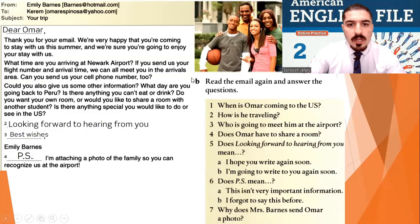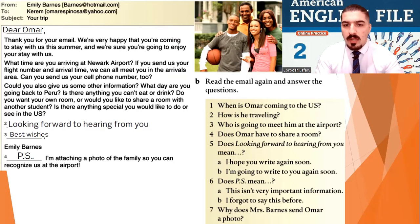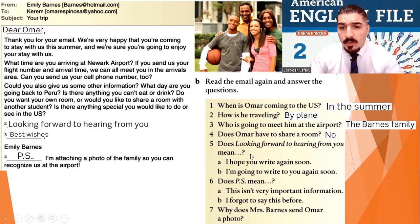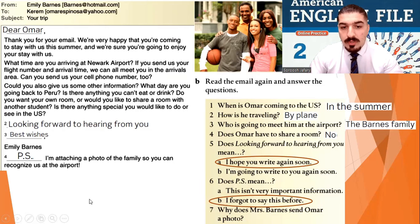Read the email again and answer the questions. Let's answer together. When is Omar coming to the US? In the summer. How is he traveling? By plane. Who is going to meet him at the airport? The Barnes family. Does Omar have to share a room? No. Does 'looking forward to hearing from you' mean A — I hope you write again soon — or B — I'm going to write to you again soon? It's A: I hope you write again soon. Does P.S. — post script — mean this isn't very important information, or I forgot to say this before? I forgot to say this before — you want to add. Number seven: why does Mrs. Barnes send Omar a photo? So they can recognize them at the airport.